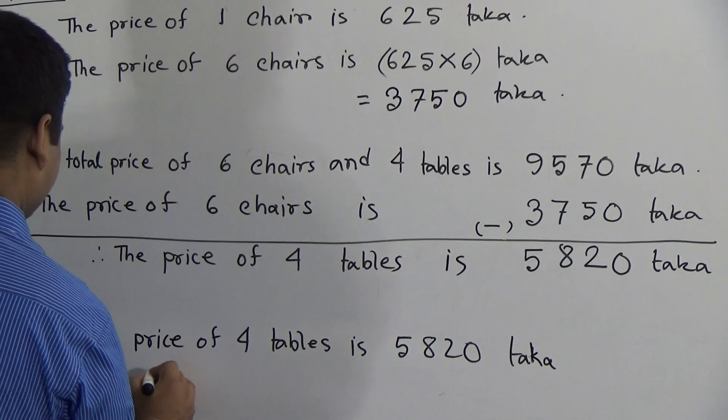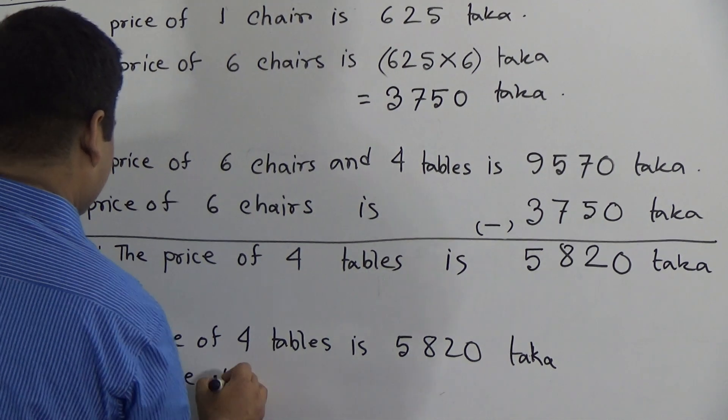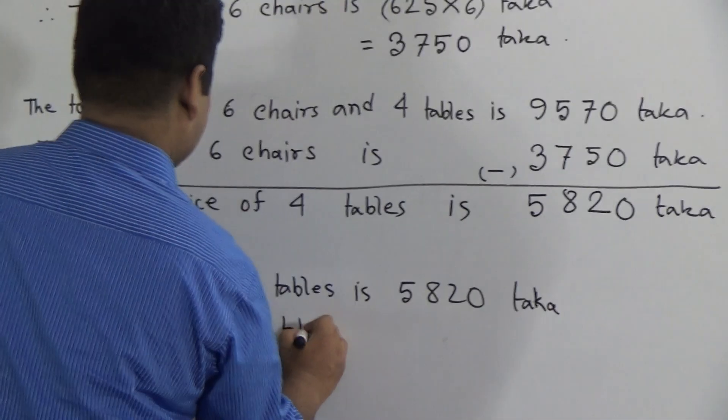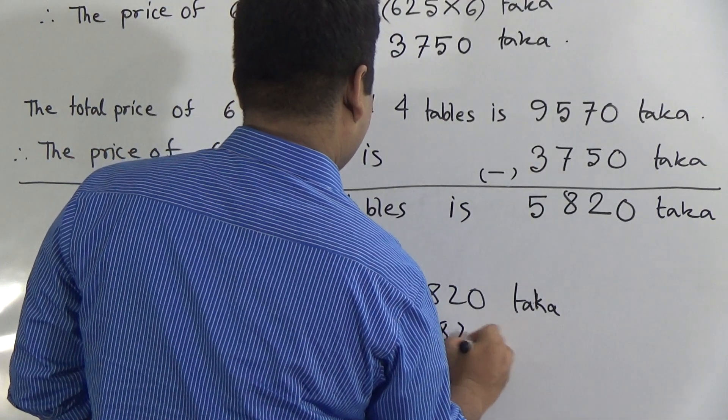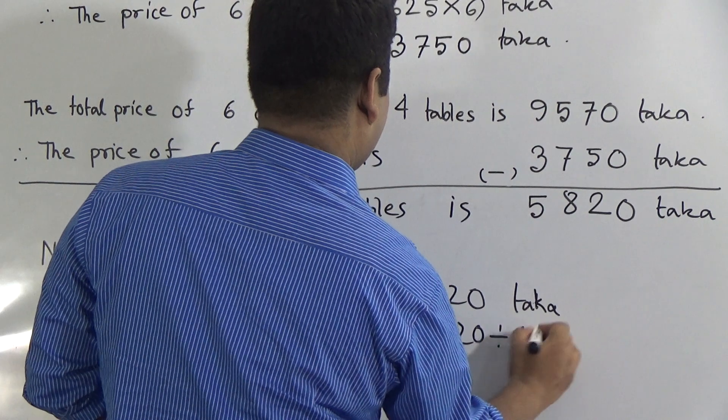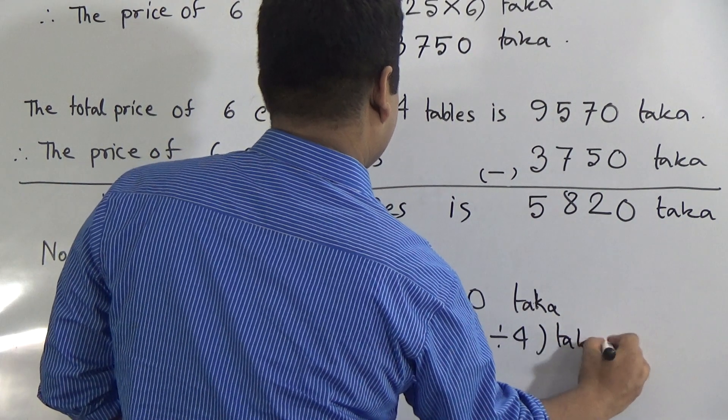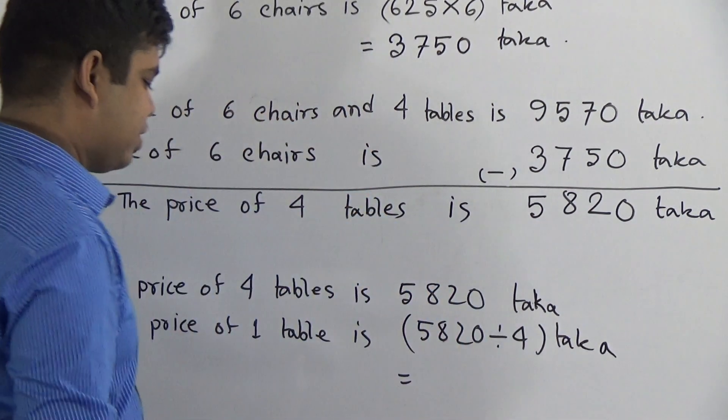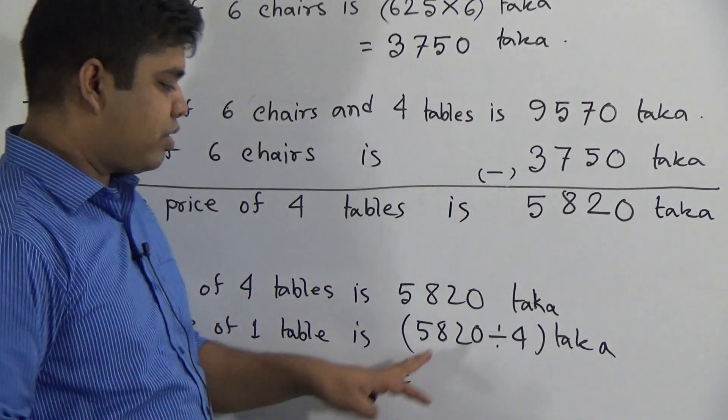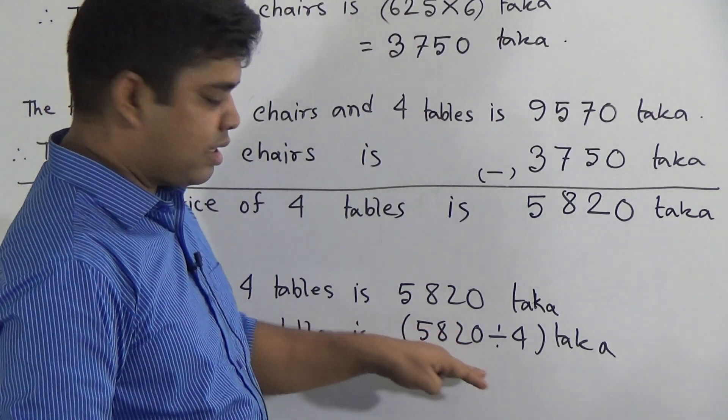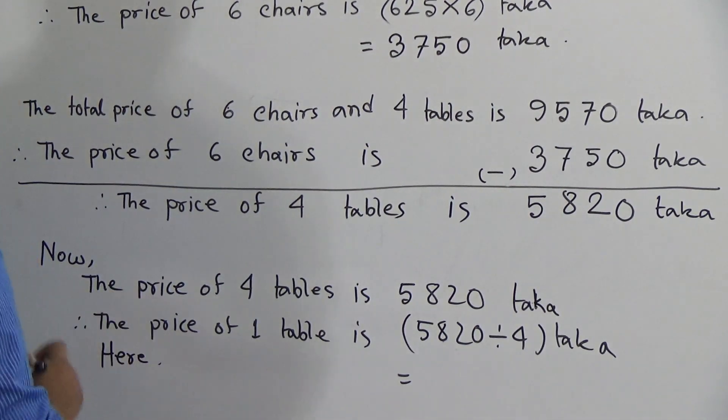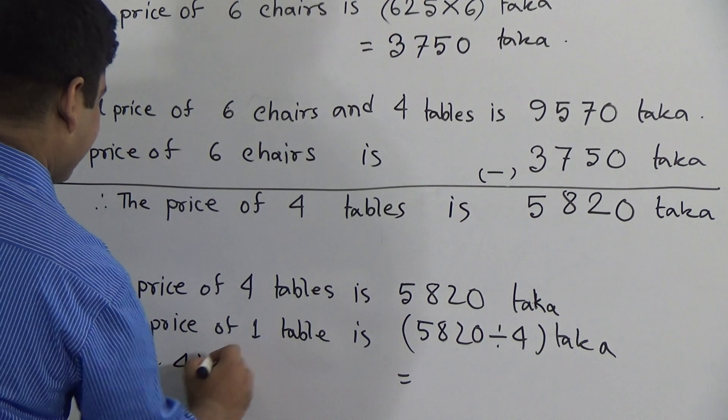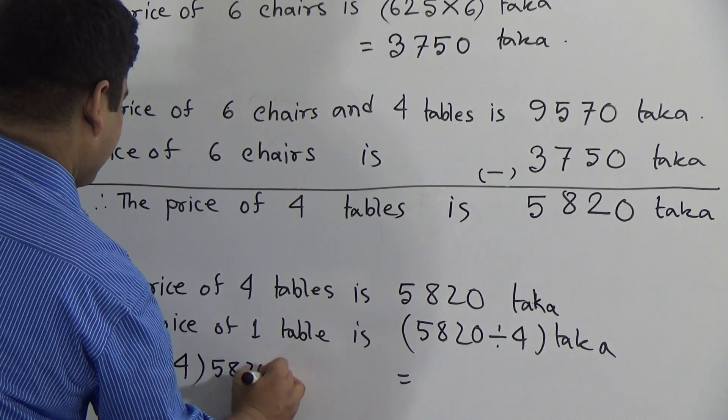Therefore, the price of one table is, we do division, 5820 divided by 4. Dear students, notice, if you cannot do division in this line, you must show here the division procedure.